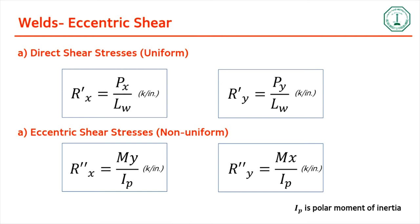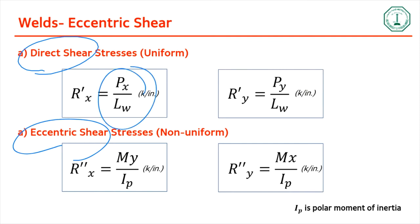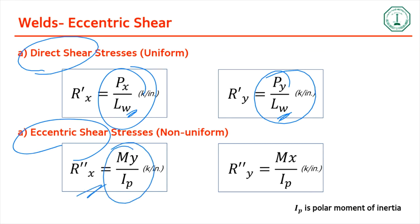As a result, you get stresses that are partly from direct shear and partly from eccentric shear. From direct shear you have rx-prime equal to Px over Lw and ry-prime equal to Py over Lw, where Lw is the length of the weld. The eccentric shear stresses are calculated from M·y over Ip for rx-double-prime, and M·x over Ip for ry-double-prime, where Ip is the polar moment of inertia.